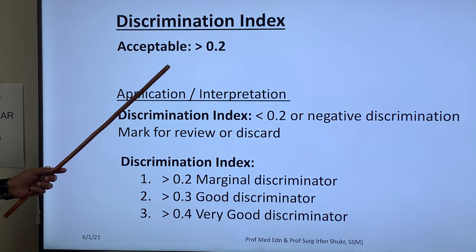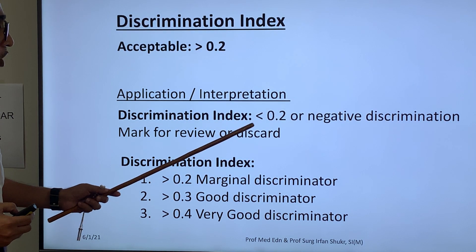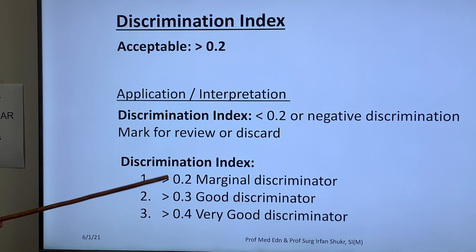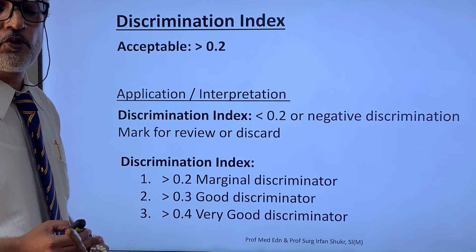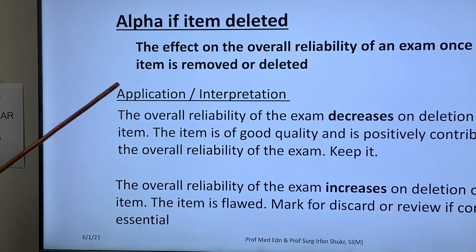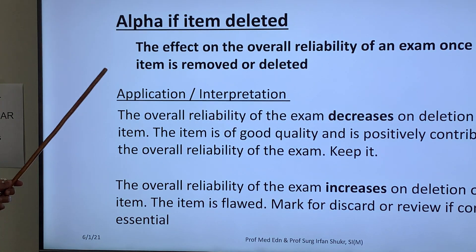Discrimination index: acceptable is more than 0.20. If a question has a discrimination index less than 0.20, or a negative discrimination, mark it for review or discard. As the discrimination index increases it is a better discriminator — more than 0.3 is a good discriminator, and more than 0.4 is a very good discriminator. These are the facts to be memorized.